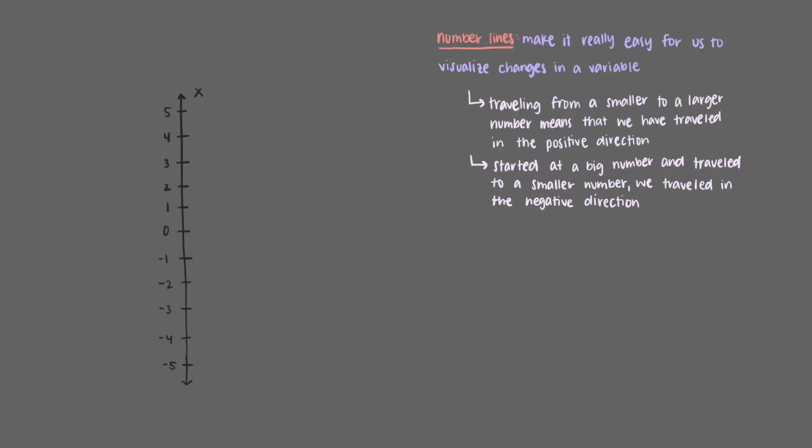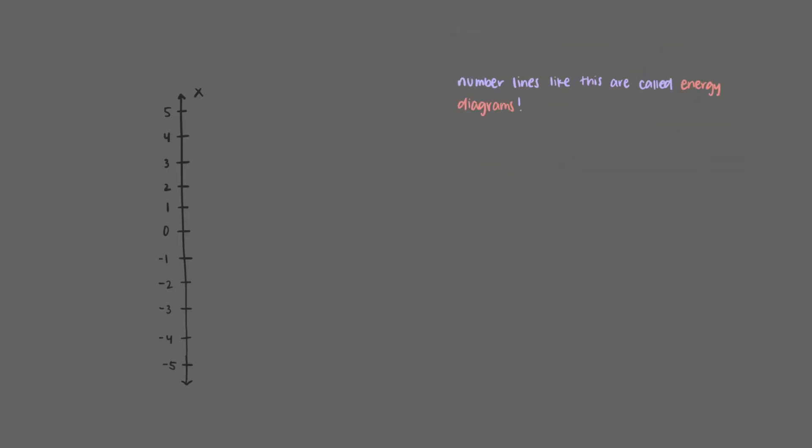Now that we've had some practice reading number lines, let's see how this relates to STEM disciplines like chemistry. We see number lines like this all the time in chemistry, but we call them energy diagrams. In these diagrams, the axis refers to the energy of something. So let's label the axis energy.